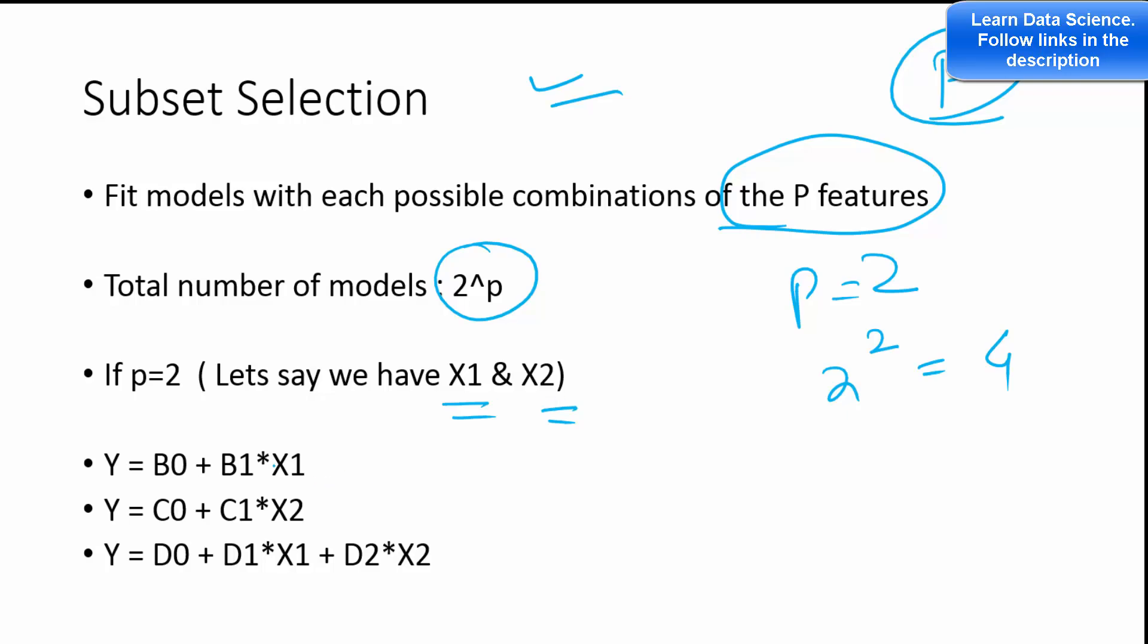This one is the first model with only X1 as the predictor, second model you have only X2 as the predictor, and the third one you have X1 and X2 as the predictors. So three models. We ideally should have four models. Well, the fourth model is nothing but only the intercept. It's just a mean intercept, so your Y is nothing but the mean of Y.